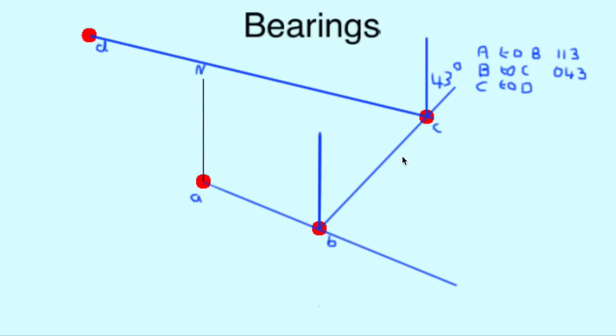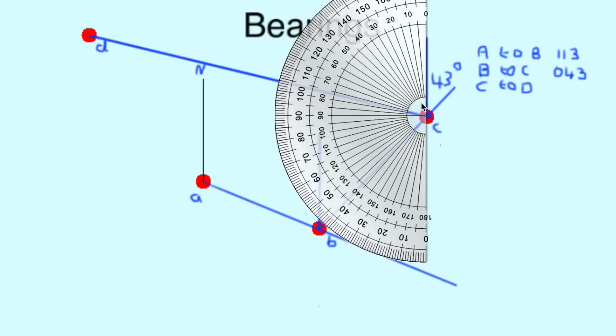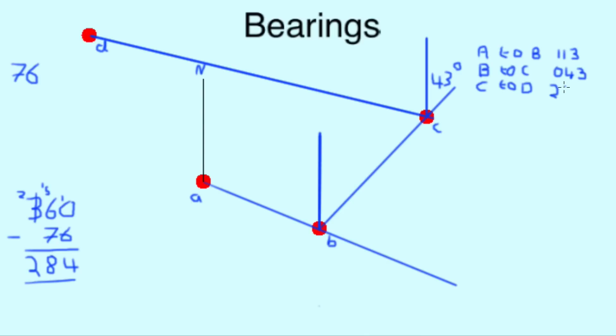Some people find another method easier. Again, keeping all the same lines, we can remember that any circle has 360 degrees. So, using our protractor and the inside measurements, we can get the angle of 76 degrees. All we need to do now is subtract 76 from 360 to get the same answer of 284.